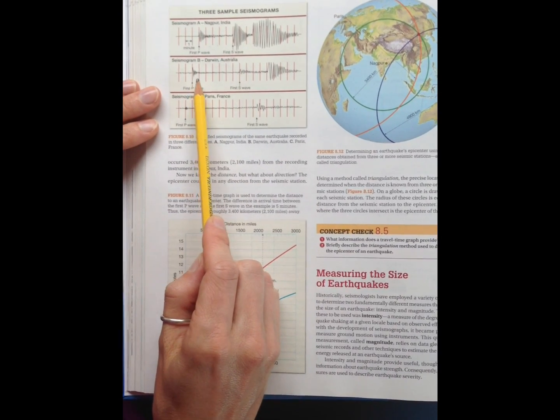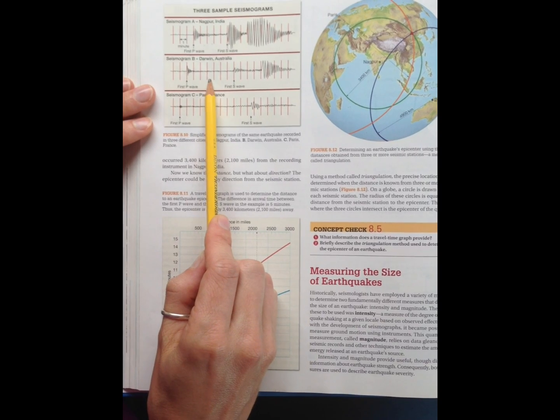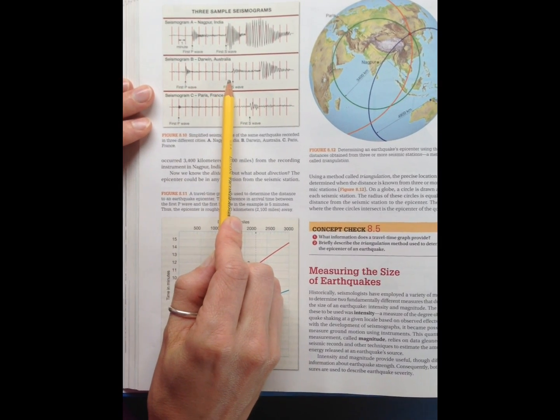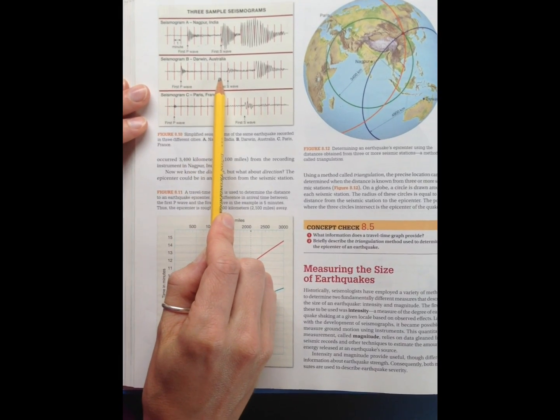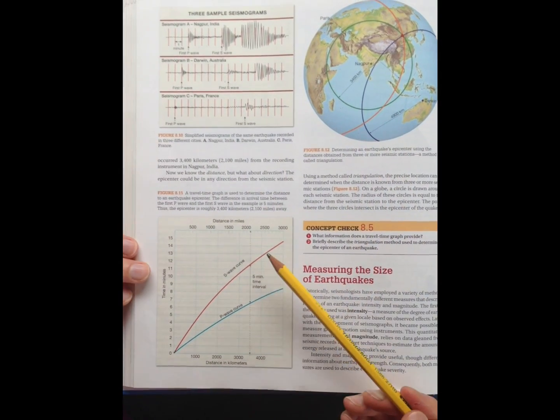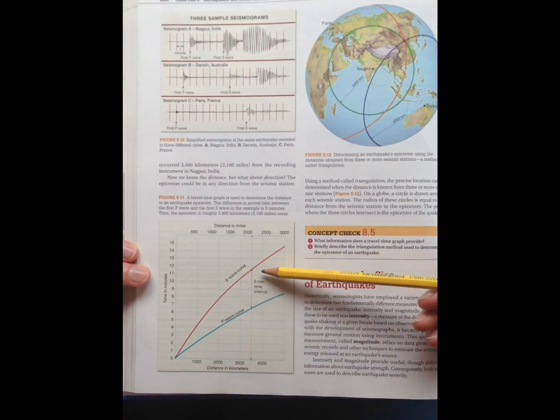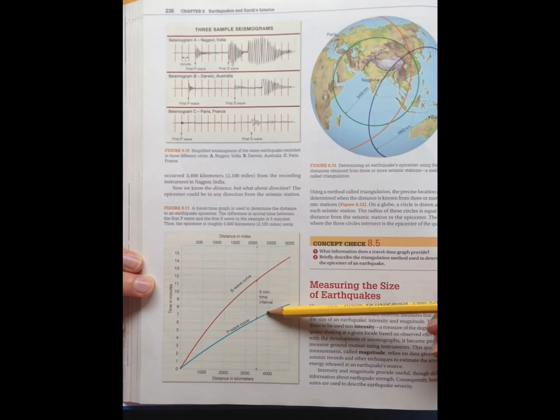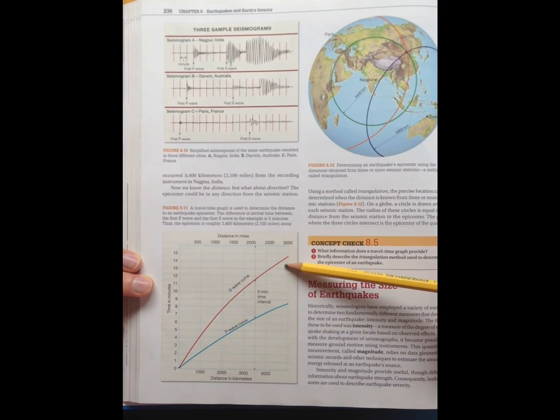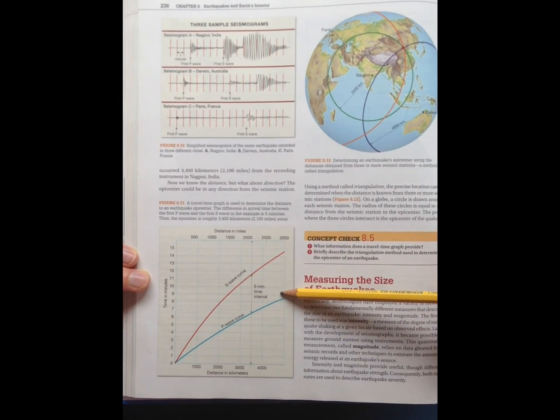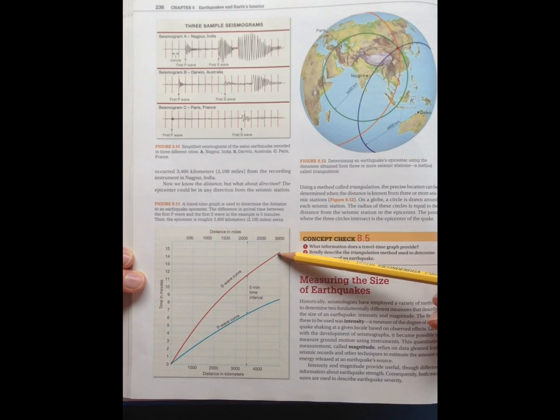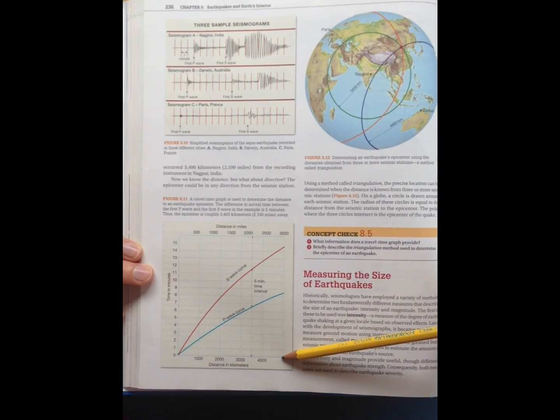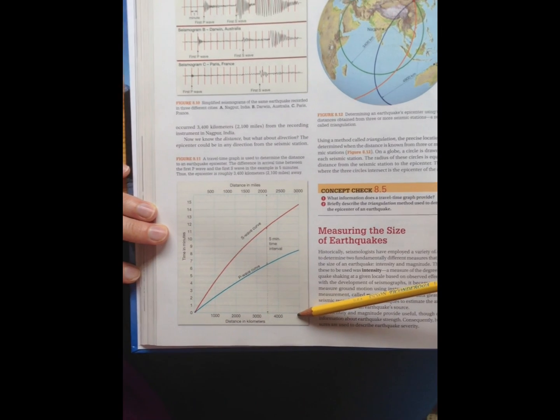For Australia, that time difference, let's look, one, two, three, four, five, six, seven minutes. A seven-minute time interval from Australia. So if we go back down to our time travel graph, seven-minute time interval. So here was five. So let's see, one, two, three, four, five, six. A little bit higher than that. Maybe up here. One, two, three, four, five, six, seven. That looks about right. Somewhere in here. So about 5,000 kilometers away from Darwin, Australia. So for the people in Darwin, Australia, they would draw a circle about 5,000 kilometers in radius.